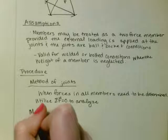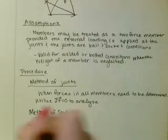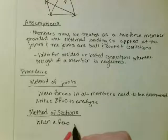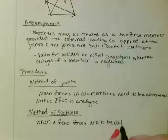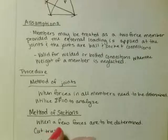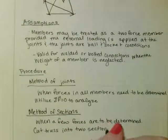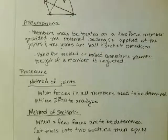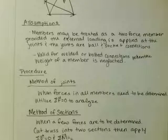And the other thing we can do is method of sections. When a few forces are to be determined, you cut the truss into two sections, then apply your equations of equilibrium. And in method of sections, you can use the sum of the forces is equal to zero, and you can use the sum of the moments equal to zero.